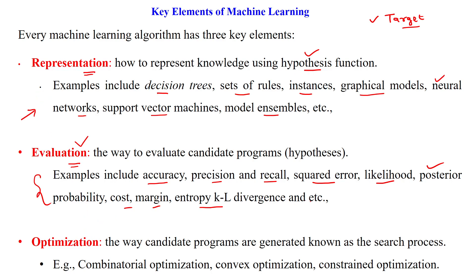After finding the difference, that means the error, we have to optimize the designed learning system. For that we can go for a search process by using combinatorial optimization, convex optimization or constrained optimization.